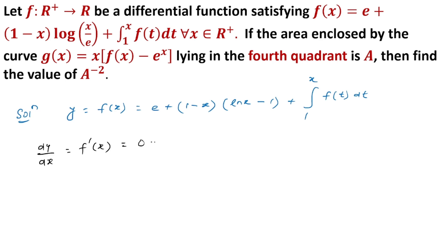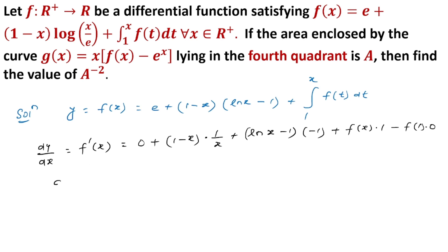The constant term differentiates to 0. For the (1 - x)·ln(x) term, using the product rule we get: 1 minus x times (1/x) plus ln x times (minus 1). Then plus f of the upper limit times derivative of the upper limit, minus f of the lower limit times derivative of the lower limit. So f'(x) = 1/x - 1 - ln x + 1 + f(x).